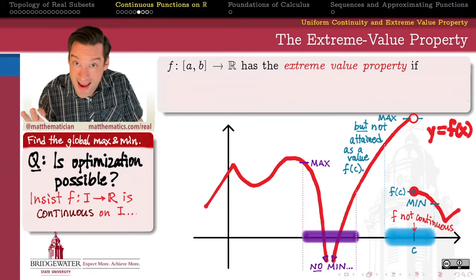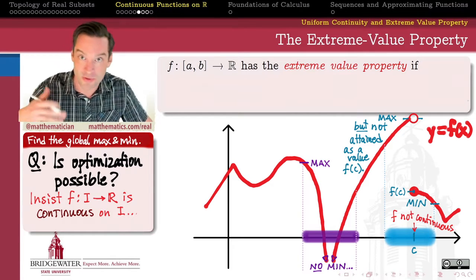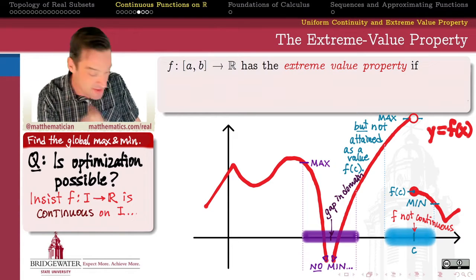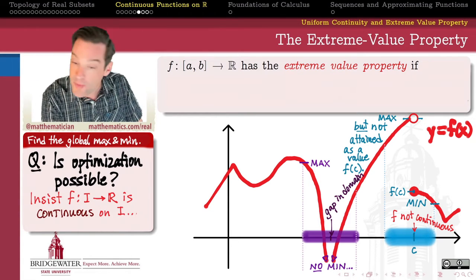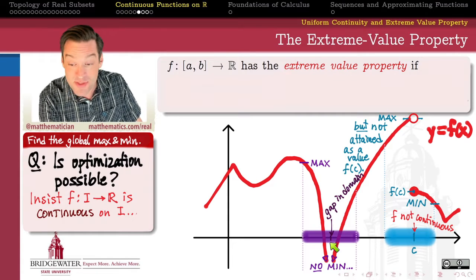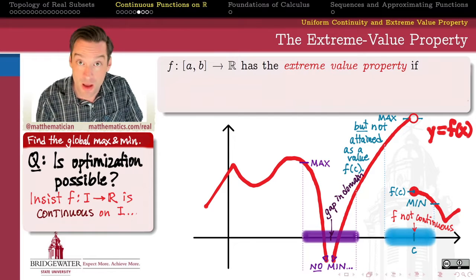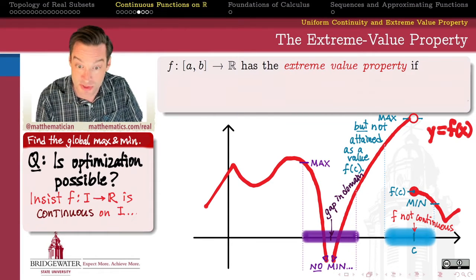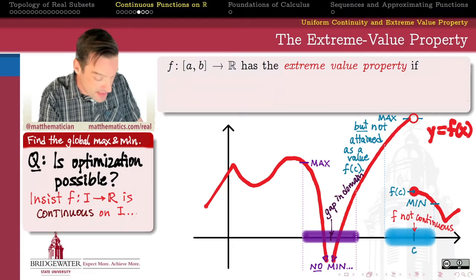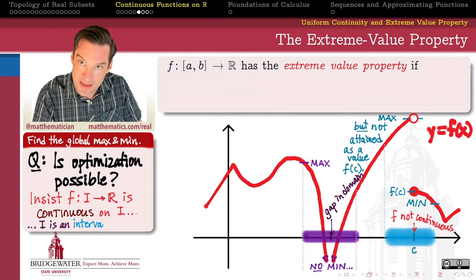Insisting on continuity is a lot to ask, but it's not really calculus — we're not insisting there be derivatives or anything like that yet. We also probably want to insist that the domain doesn't have any gaps in it. If I have a vertical asymptote in my function, there's going to be a little gap in the domain where that asymptote resides. So I probably want there not to be any gaps in the domain as well — meaning my domain should be an interval.